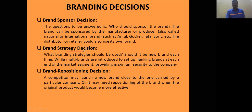Brand repositioning: for example, when Maruti Omni was released it was banned from Delhi's outskirts because vehicle tabs had increased. Later, the brand was repositioned — it was stated to be not a van but a family car — which helped revive it.